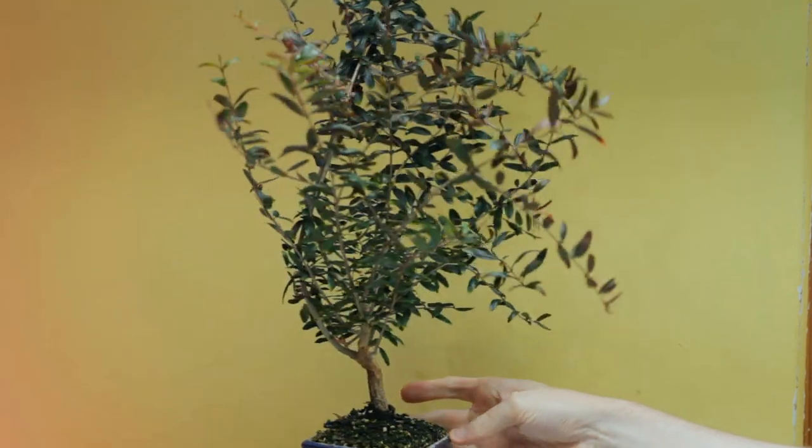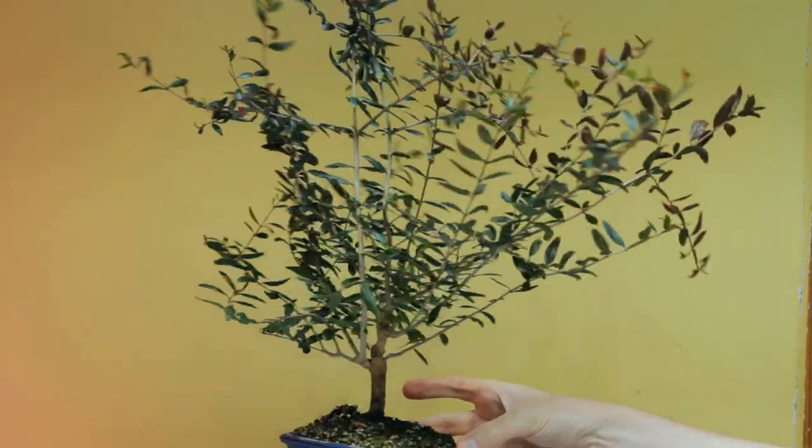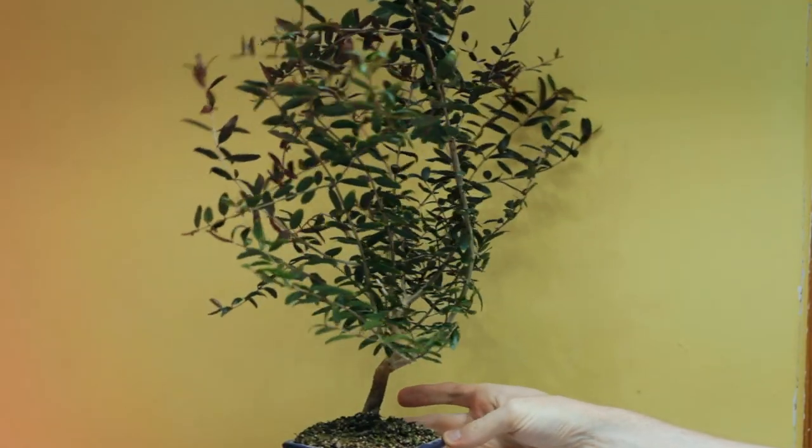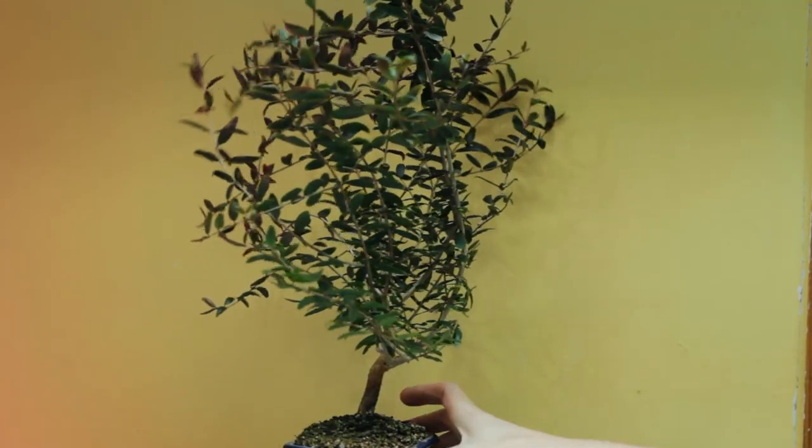And here it is in September. Growth is starting to slow down now. But you can see by how it's grown that it was up against the side of the grow area wall. It kind of looks a bit squished on one side.